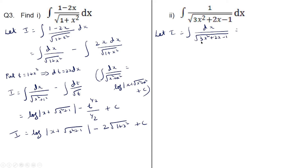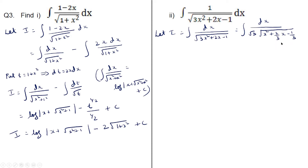Let us take the coefficient of x squared, which is 3, outside. So we get integral dx by root 3 into root of (x squared plus 2 by 3 x minus 1 by 3). Now let us try to complete the square of this term.